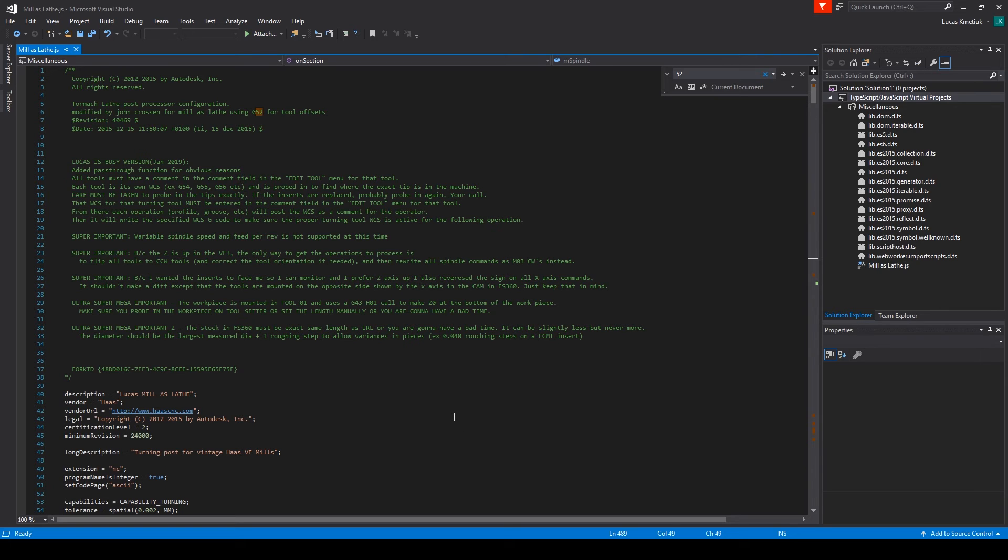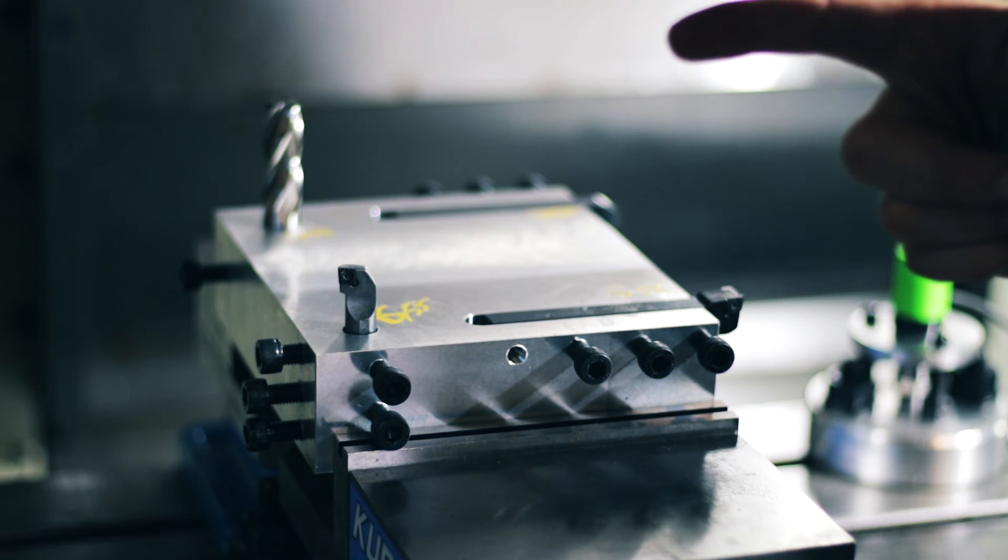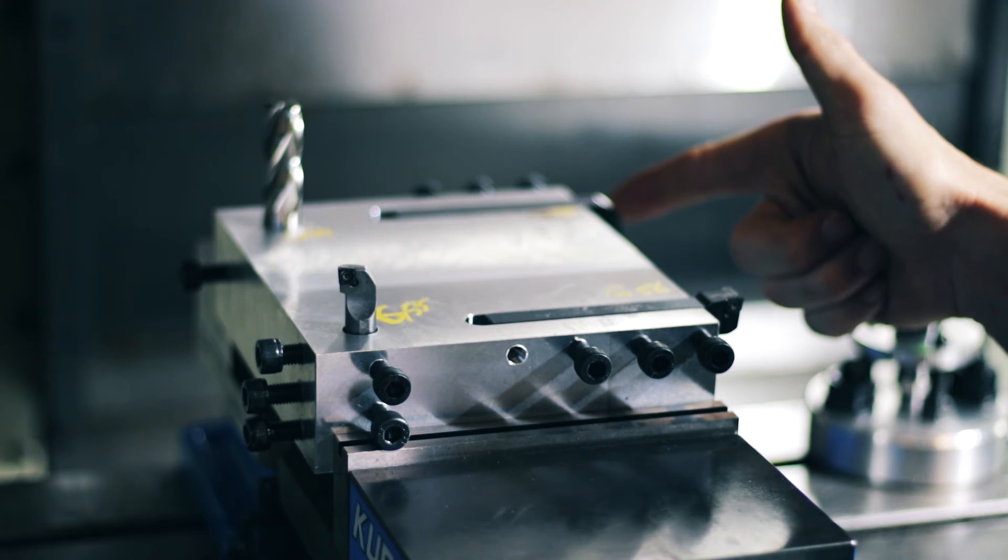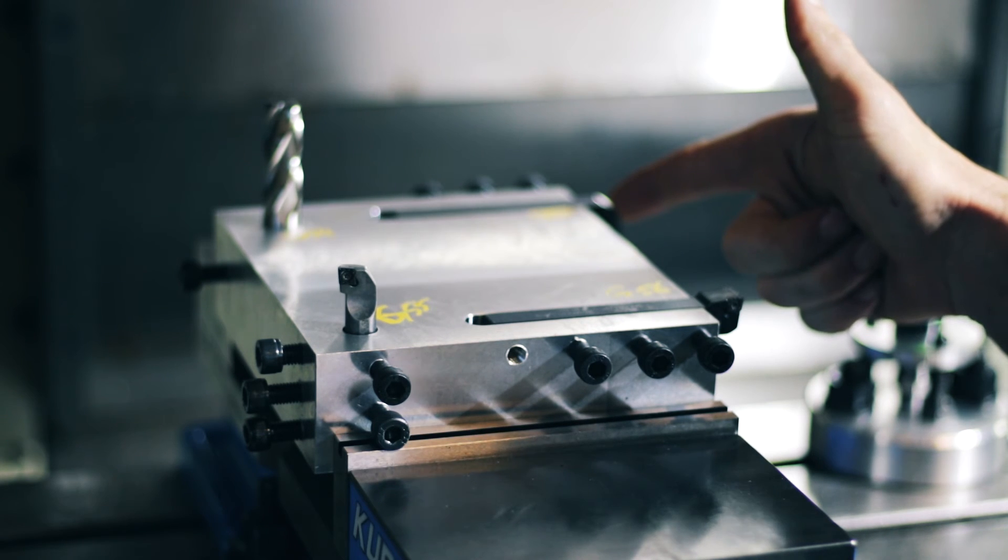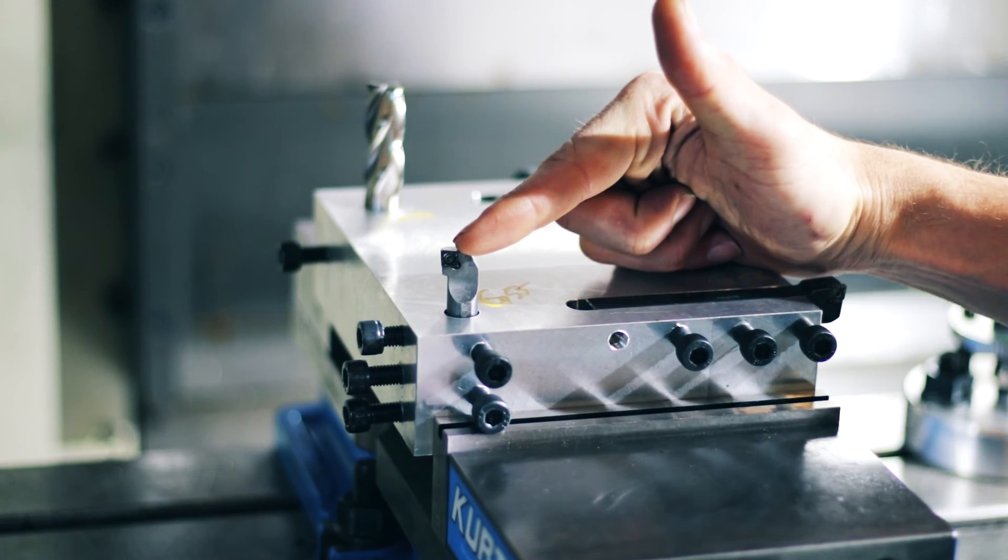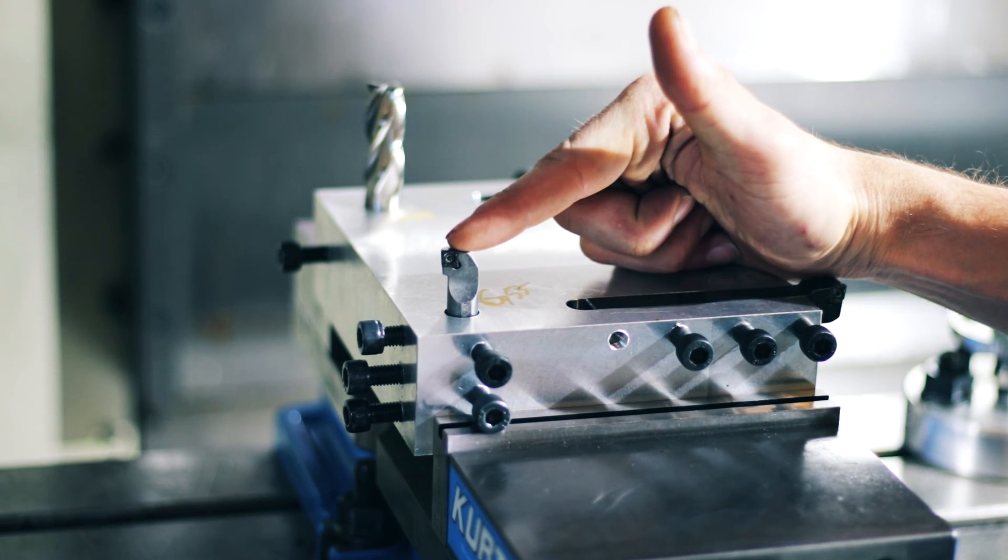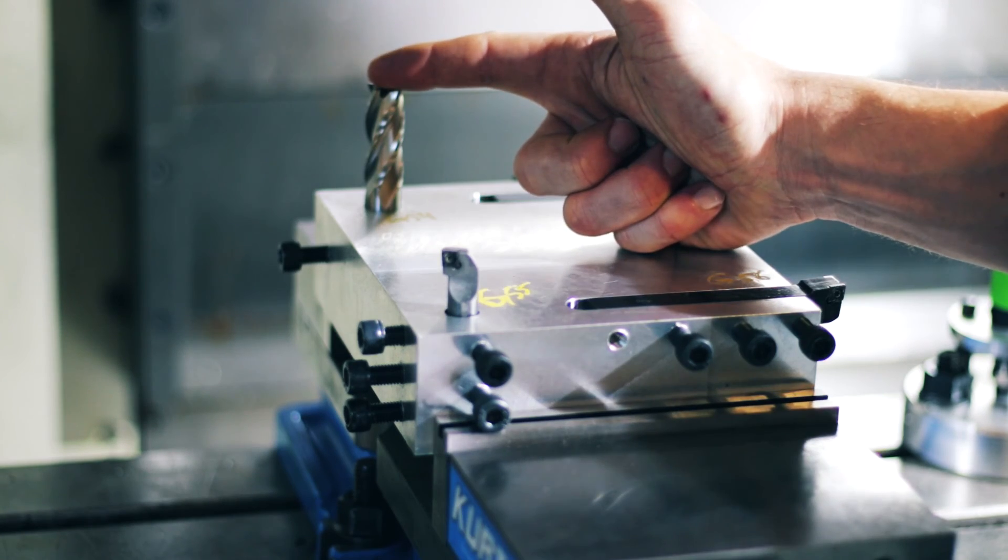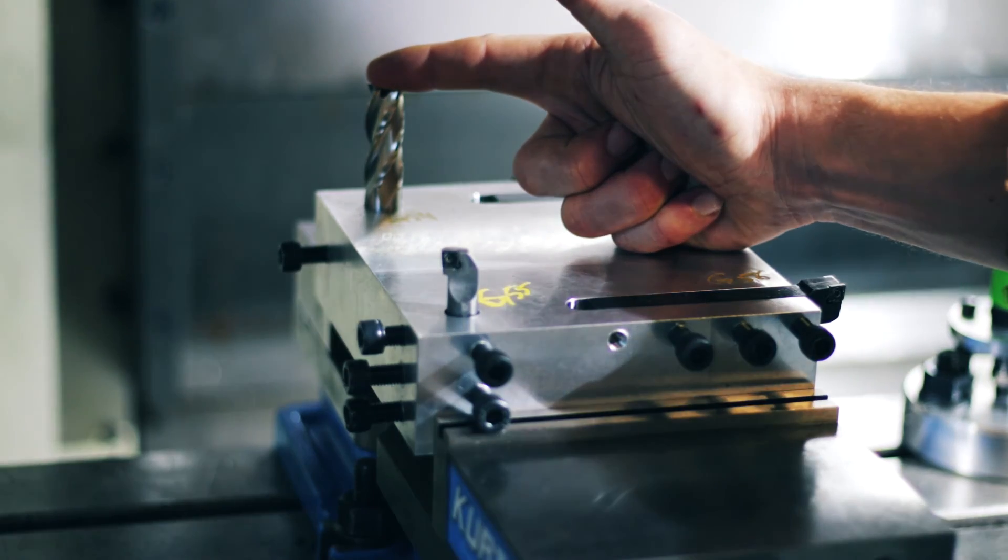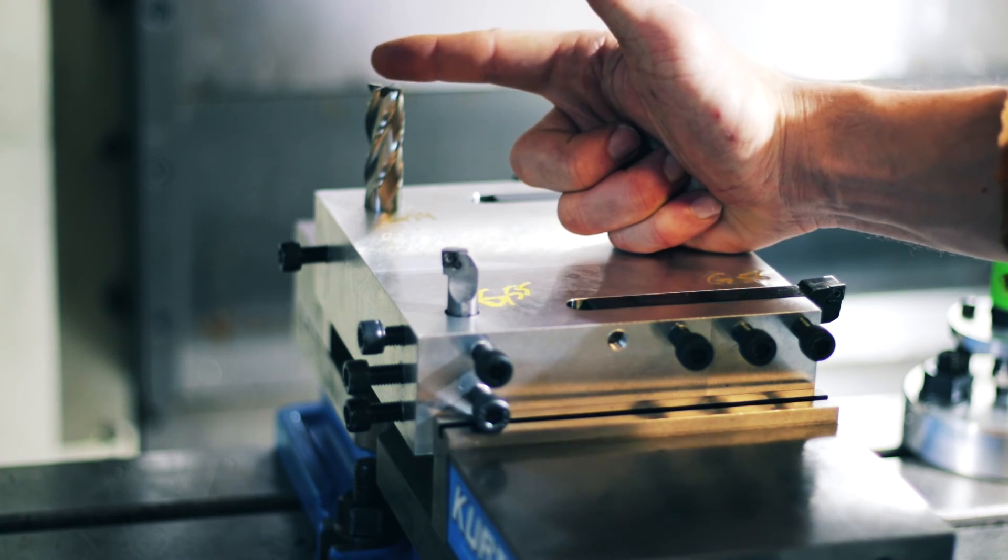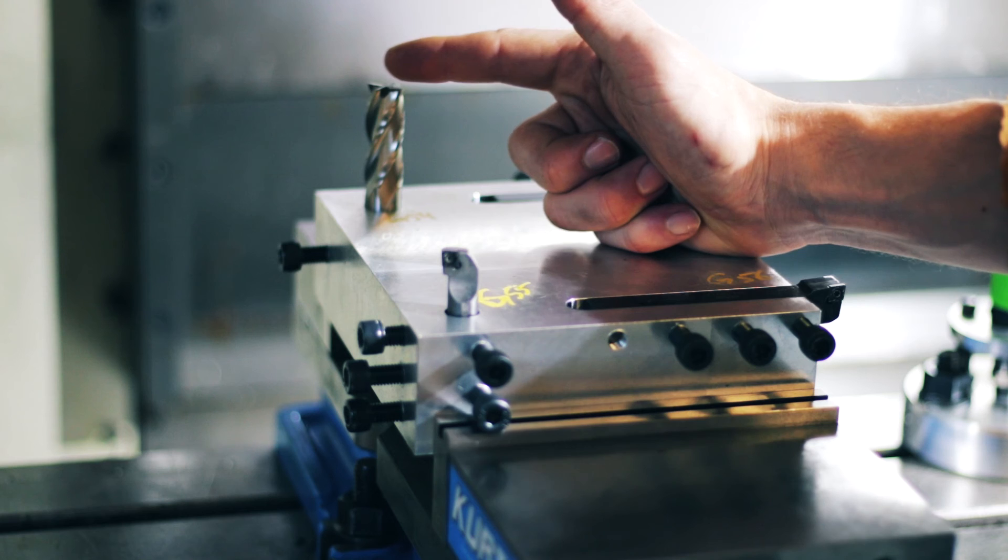So now that I showed you how to comment each one of these in Fusion, how the post processor changes the work coordinate system to the correct one, now I want to tell you about why I chose these. So I need to bore out the end of the shift knob for the sticker that's going to go in there, and I needed a flat flat surface right down to the center. And an end mill center cutting is pretty much the only way I could think of or know how to do it.